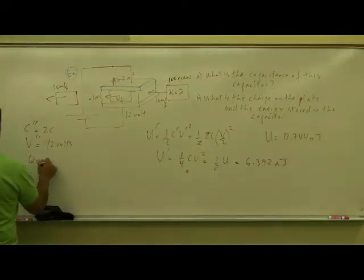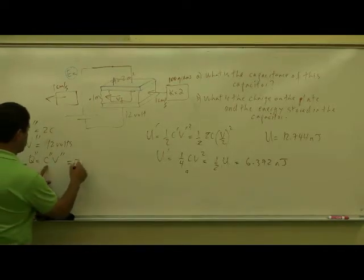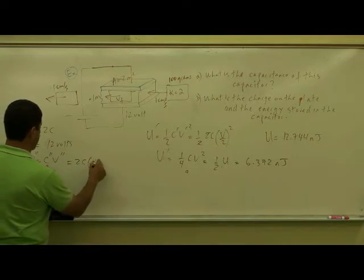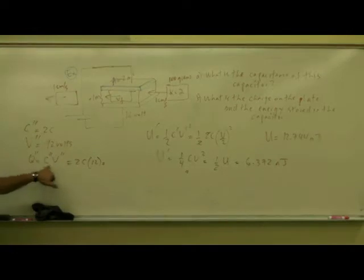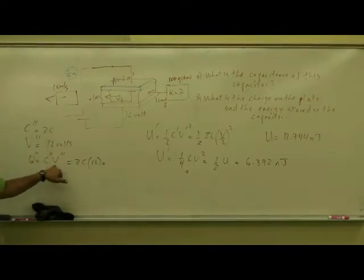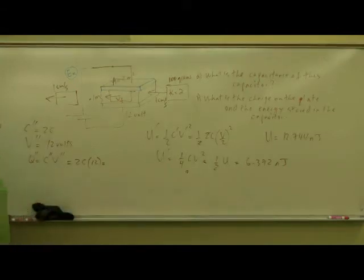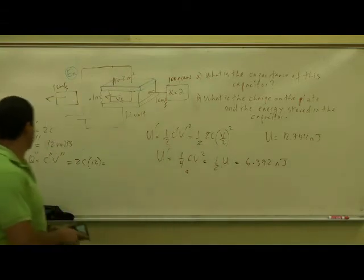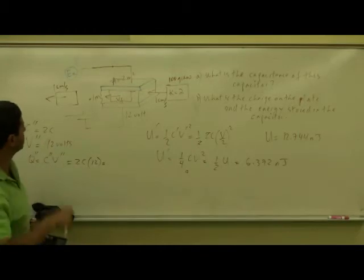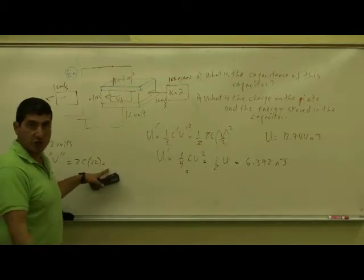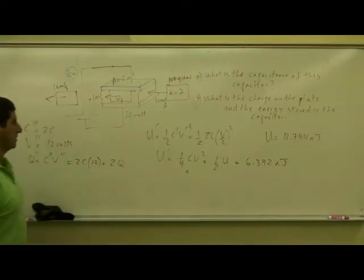Well, Q is equal to C V. So Q double prime is C double prime times V double prime. And then this is equal to 2C times 12. So basically the capacitance has doubled, but the voltage has stayed the same. So the charge is twice the original charge, right? And what was the original charge? Right now I don't have it in front of me, but whatever was our original charge, the charge is twice that. So it's going to be two times Q.